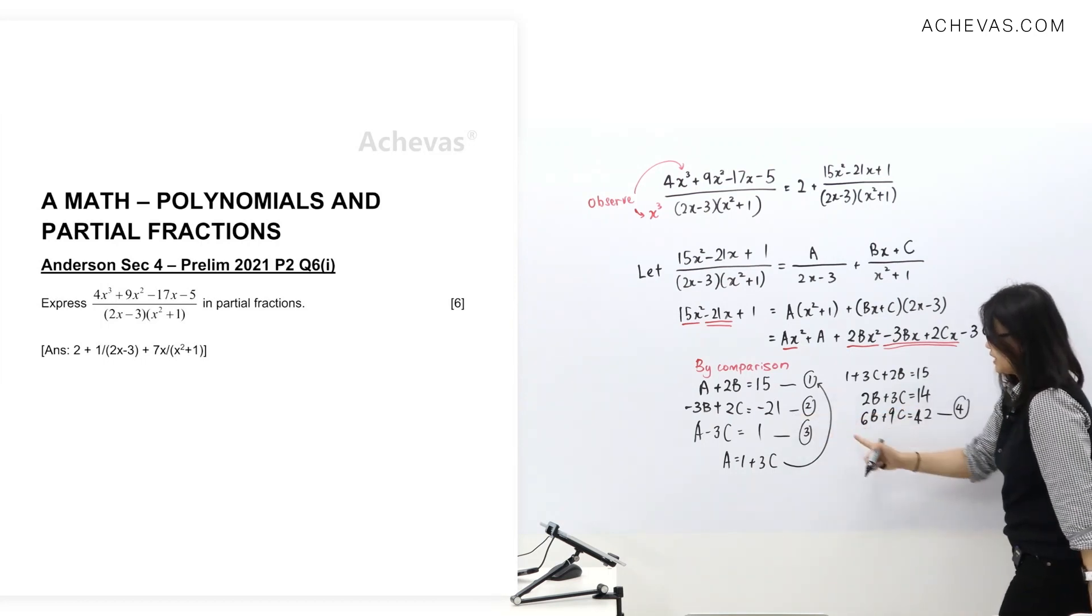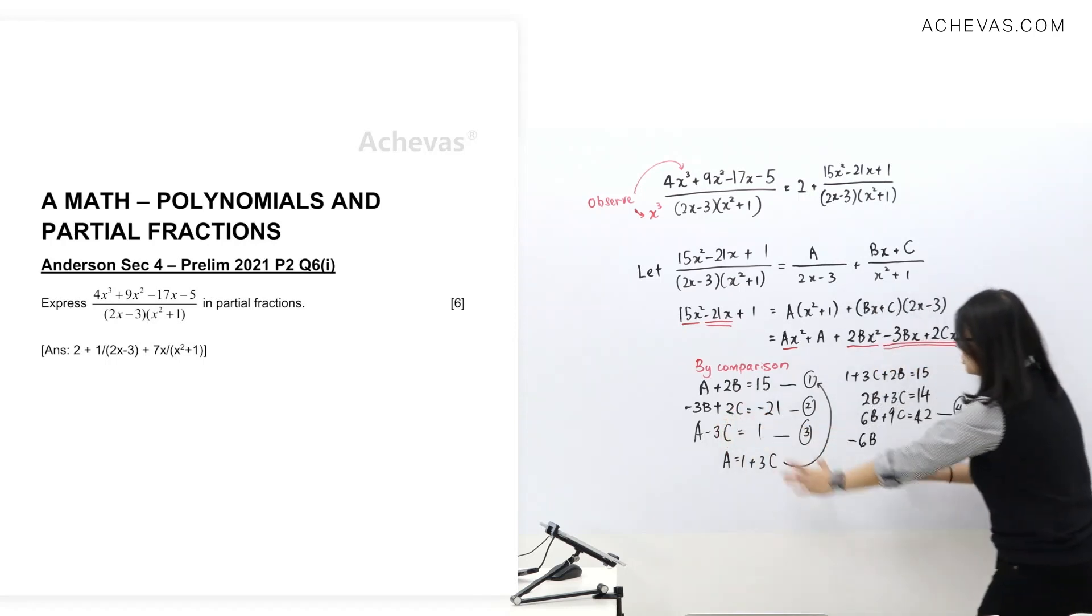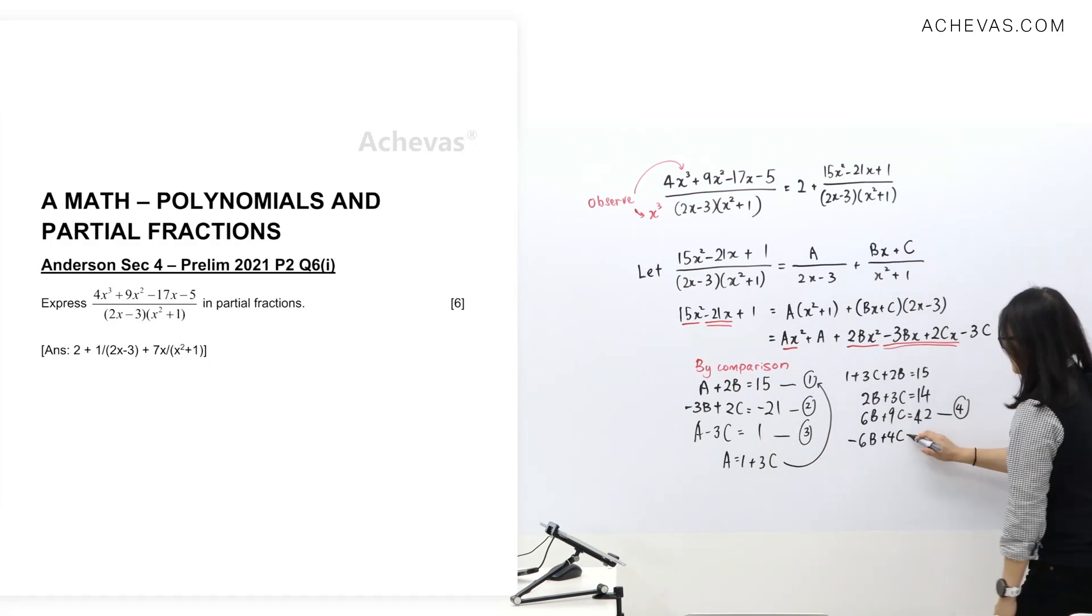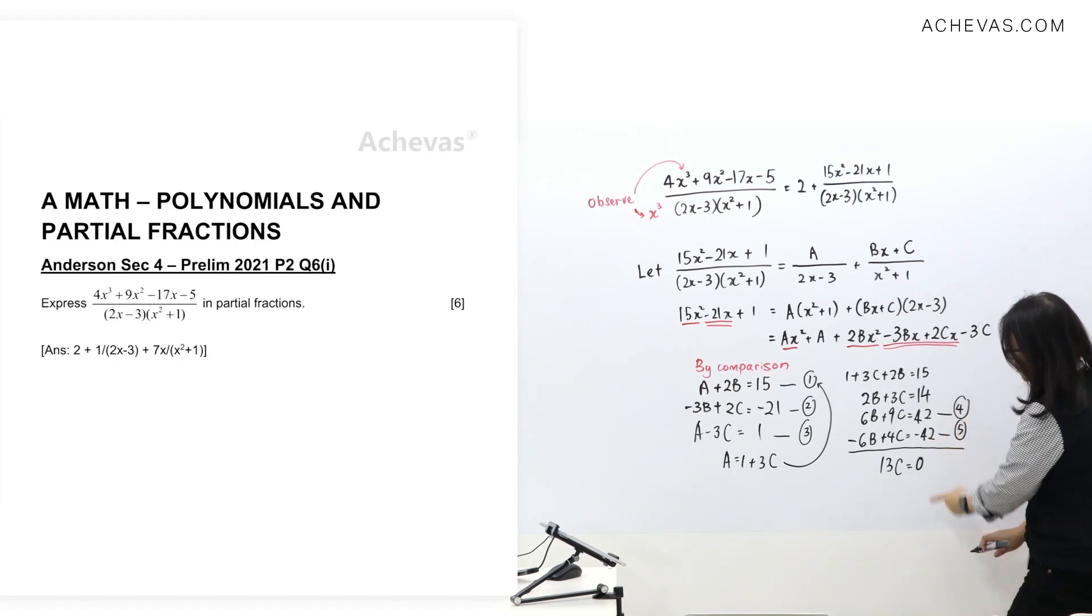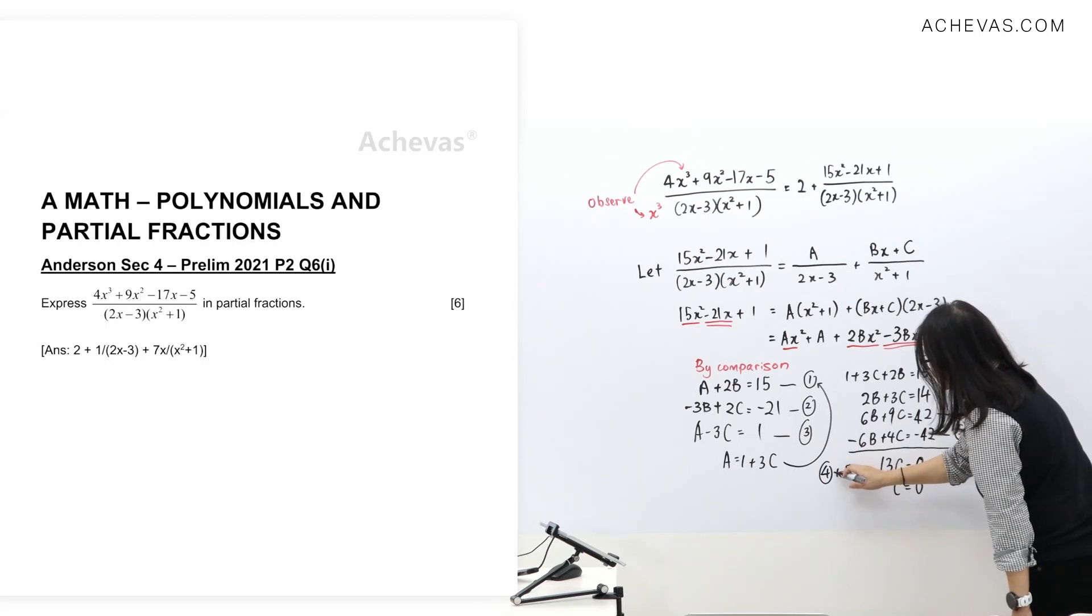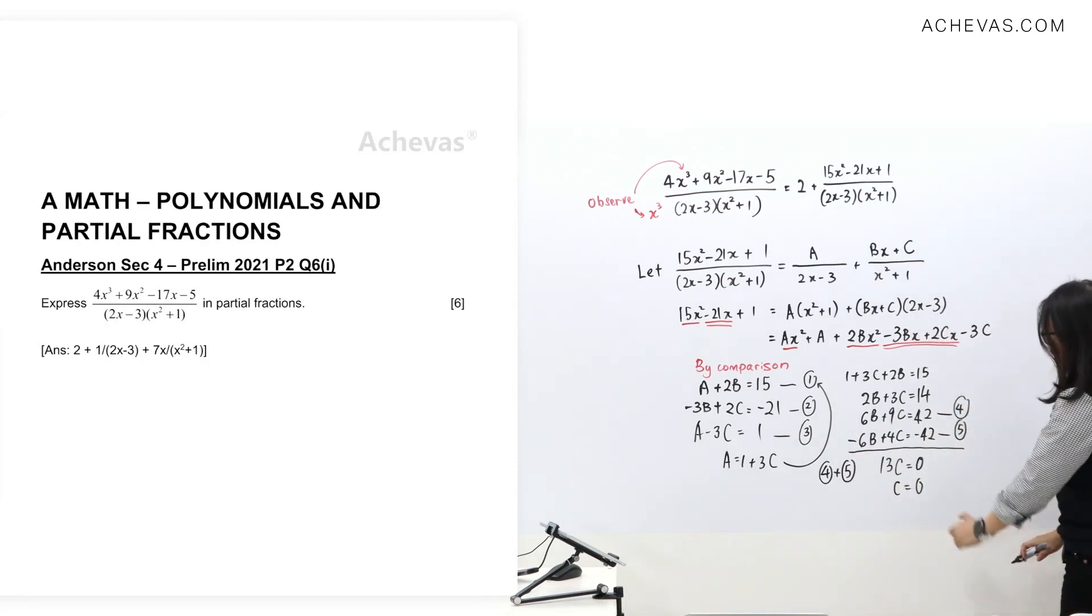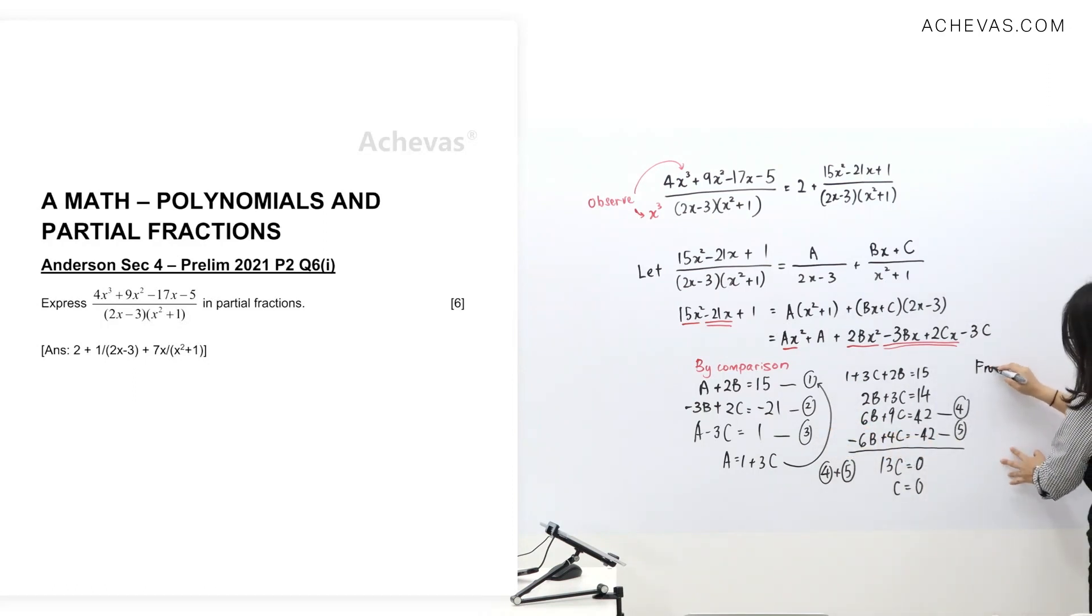I'm going to times 2 here. I'll get -6B, 2 times 2C is 4C, times 2 here is -42. That's equation 5. Solving 4 and 5, we add them. This one is gone. 9C + 4C gives 13C, 42 + (-42) is zero. So C value must be zero. Equation 4 plus equation 5 reaches this step. Now that C is zero, let's insert in equation 3. A - 3(0) = 0, so A value is 1.